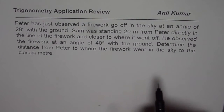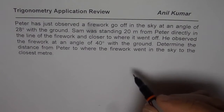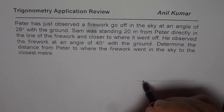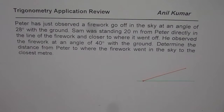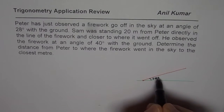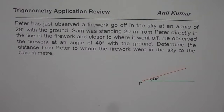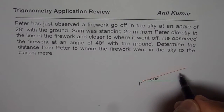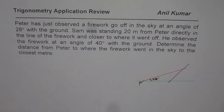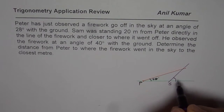Let us first sketch the scenario. That is the ground, and let us say Peter is observing from this point at an angle of 28 degrees — so let me write down 28 degrees. Now, point P for Peter. It says Sam was standing 20 meters from Peter but closer to where the firework went off, so Sam's position is somewhere like this, and his angle of elevation is 40 degrees.